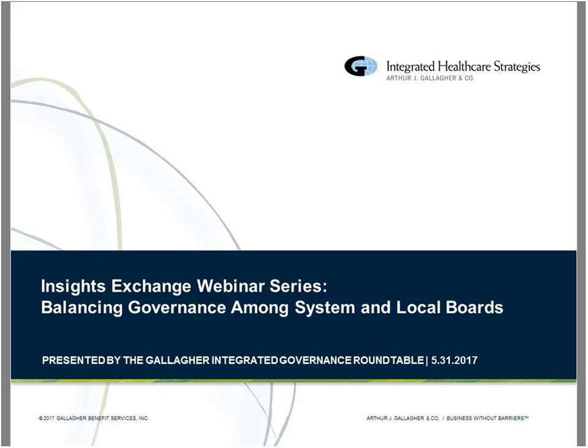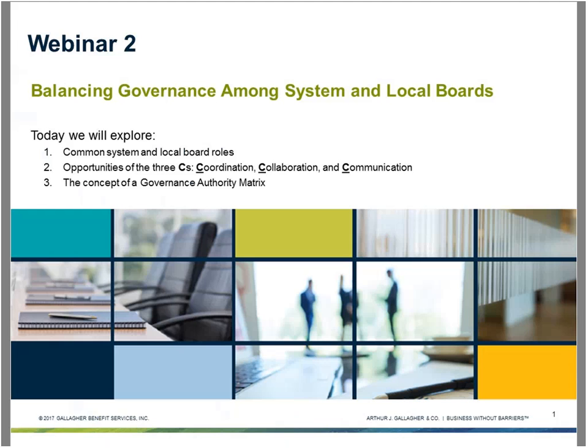As you'll see on the title slide, we're going to be looking at balancing governance among system and local boards, and this is part of a four-part series. We'll be looking at some of the common roles and responsibilities of different boards within these systems and different governing groups and task forces and councils. We'll be looking at how to operationalize these deceptively simple concepts of coordination and collaboration and communication. We'll also be providing you with a governance authority matrix which looks at providing a structured way to stimulate conversations within your organization about who does what and who has what degrees of accountability and responsibilities in different decision making in these larger systems.